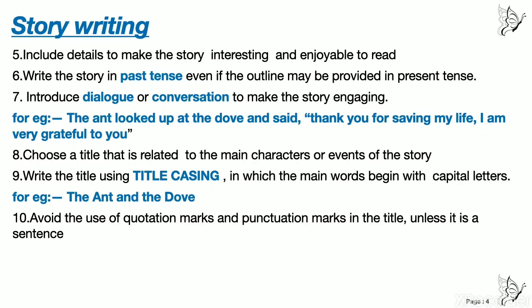Number seven — introduce dialogue or conversation to make the story engaging. You can make dialogues and write them in the story. For example: the ant looked up at the dove and said, 'Thank you for saving my life. I am very grateful to you.' You have double inverted commas before 'Thank' and after 'you' — this is the dialogue. You can introduce dialogue; what the ant said is in direct speech inside the quotation marks.